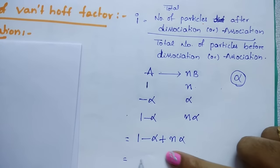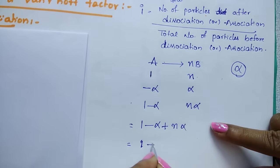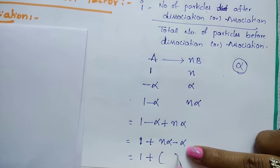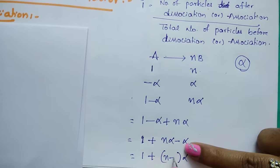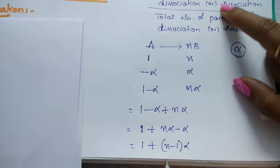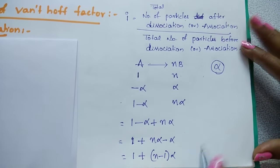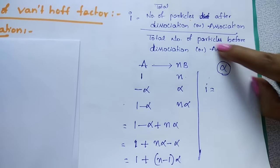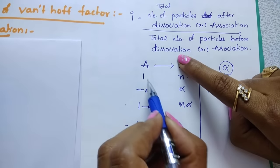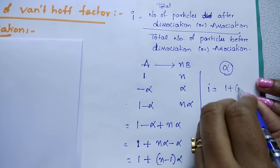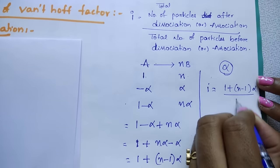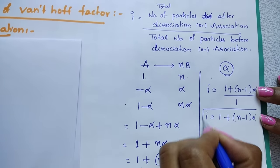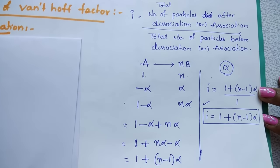Rearranging: 1 plus N×alpha minus alpha. Taking alpha as common gives 1 plus (N minus 1)×alpha. This is the total number of moles after dissociation. Therefore, I equals [1 plus (N minus 1)×alpha] divided by 1, which gives I = 1 + (N − 1)α. This is the relationship for dissociation.